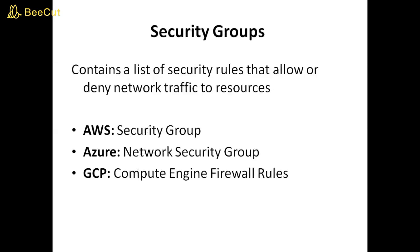Security groups: contains a list of security rules that allow or deny network traffic to resources. AWS: security group. Azure: network security group. GCP: Compute Engine firewall rules.